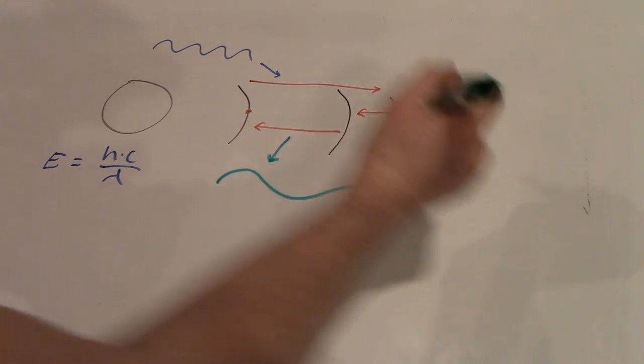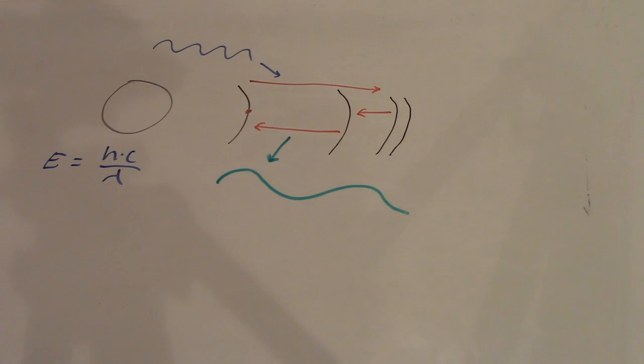This is actually how fluorescent lamps work. Current excites mercury gas, causing it to emit ultraviolet light, which is absorbed by a special coating on the glass, which in turn emits visible light through the process just described.